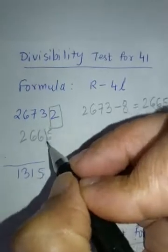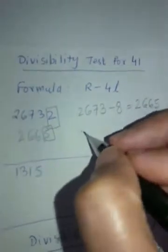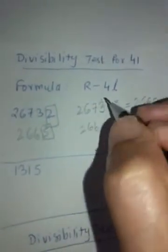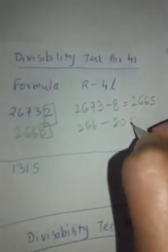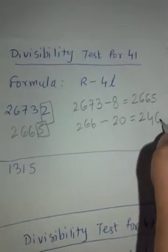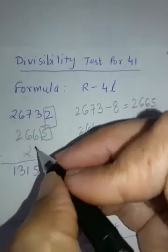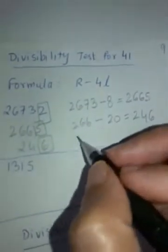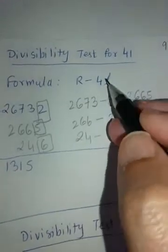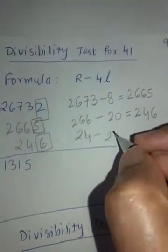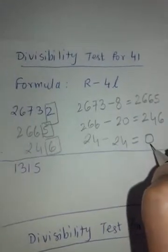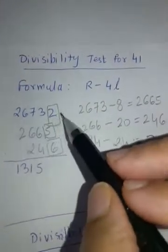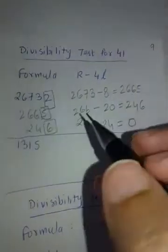266 minus 4 times 5 is 20, which is 246. Again copying it here. 24 is the remaining number, 4 times 6 is 24, so this is 0. You got a 0 at the last step, that means this number is divisible by 41.